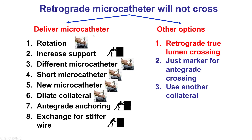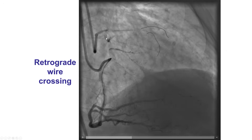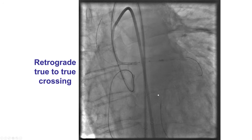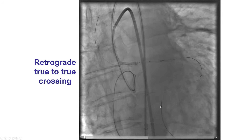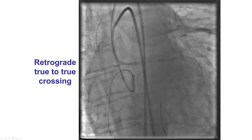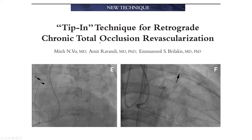Sometimes this fails and the microcatheter cannot be delivered. The first alternative option is to attempt retrograde crossing from true to true. This is an example of an LAD CTO with retrograde advancement of a wire from the right coronary artery. Unable to advance the retrograde microcatheter all the way to the LAD; however, the occlusion was short and the retrograde guide wire was successfully advanced into the proximal true lumen and out into the aorta. The guide wire was snared, and the procedure was successfully completed.